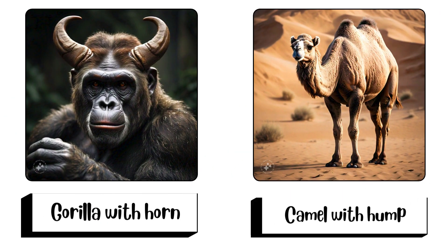Which one is incorrect? A gorilla with a horn, or a camel with a hump?